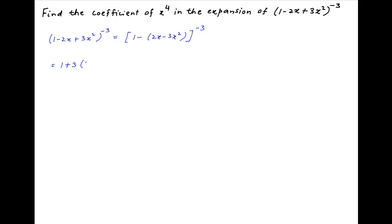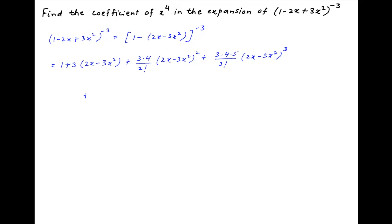Using the binomial theorem, this can be expanded as 1 plus 3 times (2x minus 3x square) plus (3 times 4) upon 2 factorial multiplied by (2x minus 3x square) raised to the power 2, plus (3 times 4 times 5) upon 3 factorial multiplied by (2x minus 3x square) cubed, plus (3 times 4 times 5 times 6) divided by 4 factorial multiplied by (2x minus 3x square) raised to the power 4.